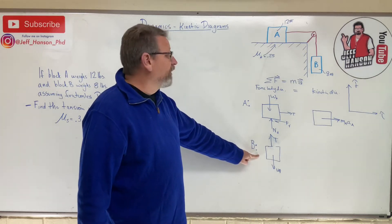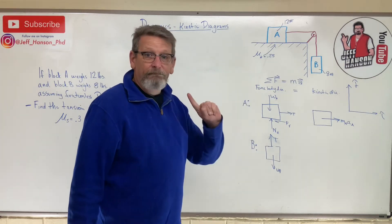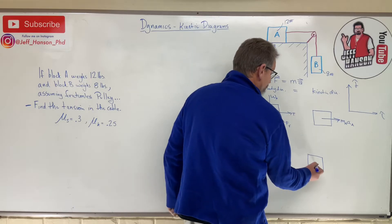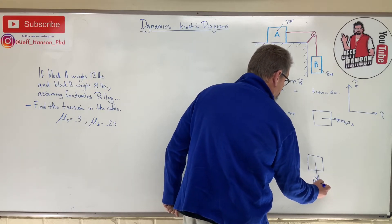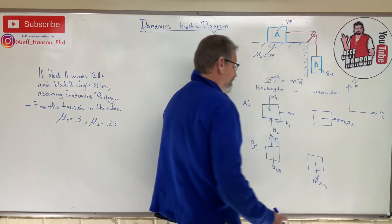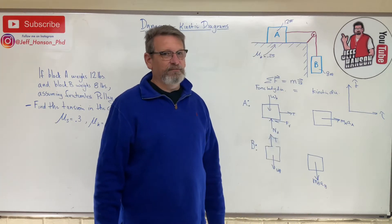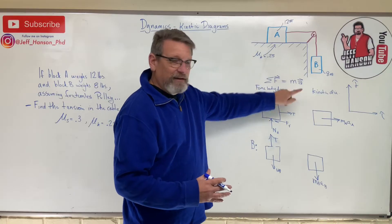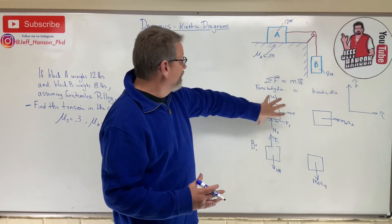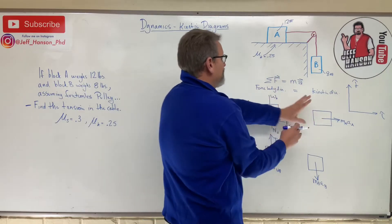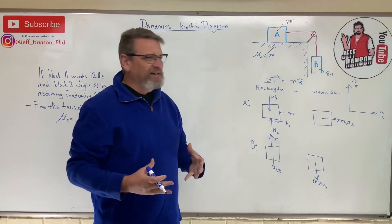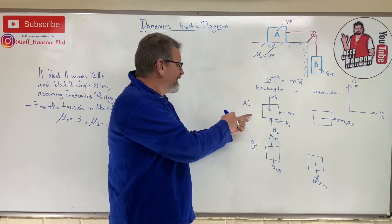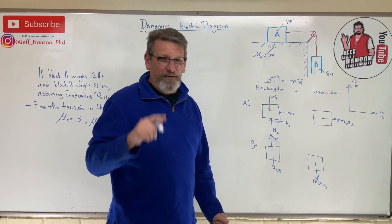For block B's force body diagram: it has the weight of block B acting downward and tension T acting upward. On the kinetic diagram side, block B is going to accelerate downward, so we have m_B times a_B. Every time you use Newton's second law on dynamics problems, draw a force body diagram and a kinetic diagram.